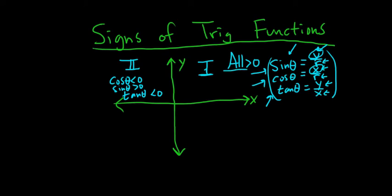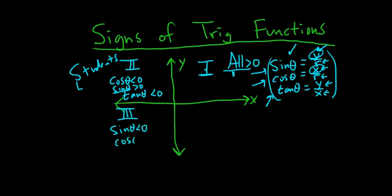There's a trick: All Students Take Calculus. All are positive in quadrant 1. Sine is positive in quadrant 2. In quadrant 3, sine theta is negative because it's the y, cosine theta is negative because it's the x, and tangent theta is positive because dividing two negatives gives a positive.